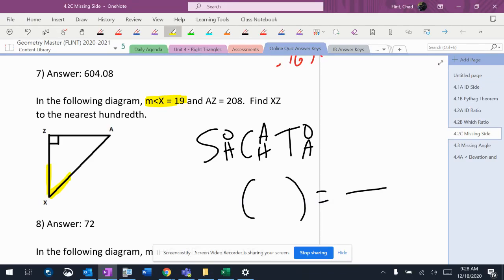So I'm using angle X here, which is that angle right there. It says AZ is 208. Find XZ to the nearest hundredth. All right, so I got all that labeled correctly.